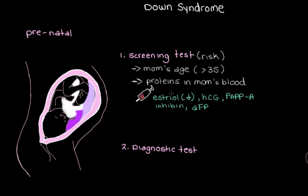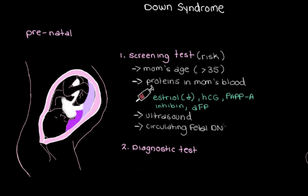We combine these findings with mom's age — women of any age can give birth to a child with Down syndrome, but there's a higher risk the older she is. We can also add an ultrasound to look for physical signs of Down syndrome. Additionally, looking in mom's blood for some of the fetus's circulating DNA can allow us to look for extra chromosome 21 genetic material, which also helps figure out the risk.